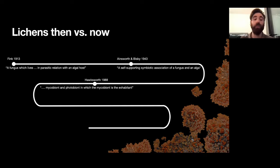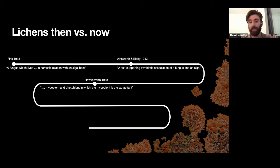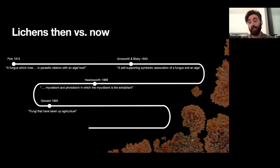Then in the eighties, work by David Hawksworth and others started to look more at the actual structure. Rather than just being a symbiosis, they started to speak about the fungus as the exhabitant. When you look at a lichen, almost all of the structures you see are produced by the fungus. So lichens were described as a relationship in which the fungus is the exhabitant producing the structure, and the algae is the inhabitant. This led to the definition of lichens as fungi that have taken up agriculture — the fungus produces optimal conditions for algae to grow and produce carbohydrates, which the fungus uses as a steady stream of energy.